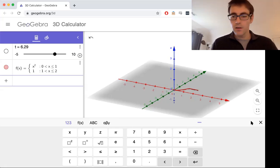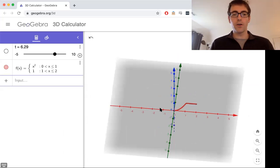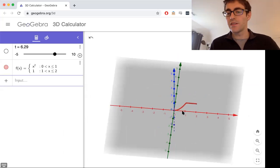And then if I hit enter, I can minimize this. This is going to give me the graph of the piecewise function. Between 0 and 1 it looks like x squared, and between 1 and 2 it's just a straight line.